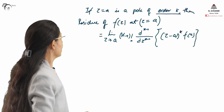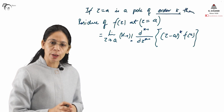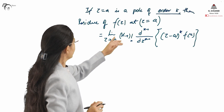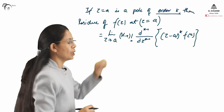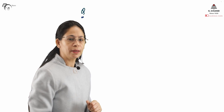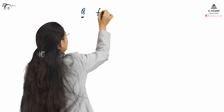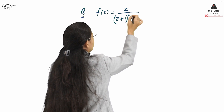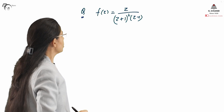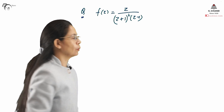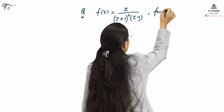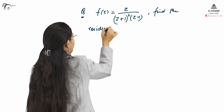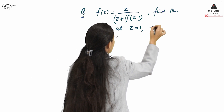This formula gives the residue of F(z) at z equals a when z equals a is a pole of order k. We will take one example to make things more clear. If F(z) = z / [(z+1)² · (z-1)], find the residues at z equals 1 and z equals minus 1.